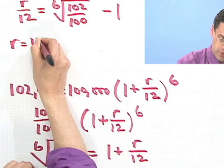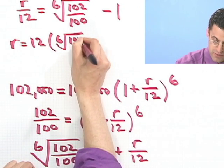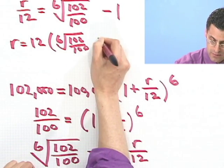Now if I multiply through by 12, I'd see that R equals 12 times that thing. Sixth root 102 over 100 minus 1.